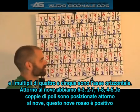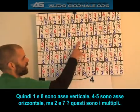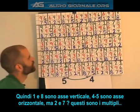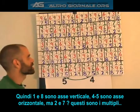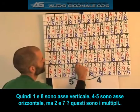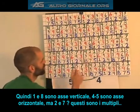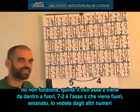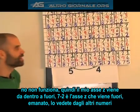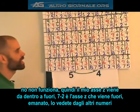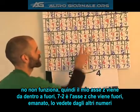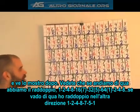My 1 and 8 are my vertical; my 4 and 5 are my horizontal. But then what about my 2 and 7? Those aren't multiples of 2 or 7 in those diagonal directions. My z-axis is actually coming from the inside out. The 7 and 2 — the z-axis — are coming out, piercing through the skin. They're emanations. They're invisible, but you can see them by the way they're displacing the other numbers, and I'm going to show you that.